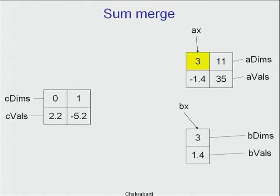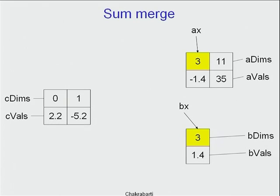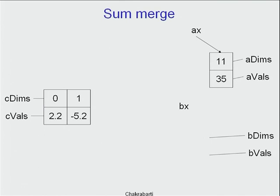When dimensions match at 3, we compute +1.4 + (-1.4) = 0. We may not want to test for exact equality — instead, eliminate any element whose magnitude drops below some epsilon. Whether to do that is application-dependent. In this example they cancel out and we eliminate dimension 3 from C. Then B empties out, A advances to 11, B has no match, and the remaining element transfers to C.